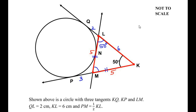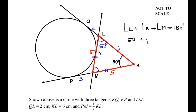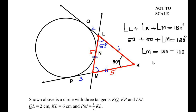Using the angle sum property of the triangle, we can find the missing angle M. Angle L plus angle K plus angle M equals 180 degrees. We have 50 plus 50 plus angle M equals 180 degrees. So angle M equals 180 minus 100, which gives us 80 degrees.